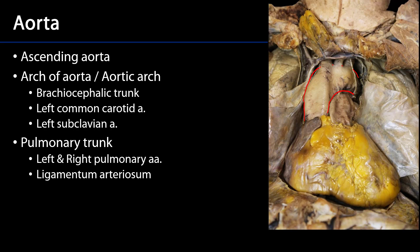There's the brachiocephalic trunk, the left common carotid artery, and the left subclavian artery. The arch of the aorta then transitions into the descending aorta, which has both thoracic and abdominal parts.